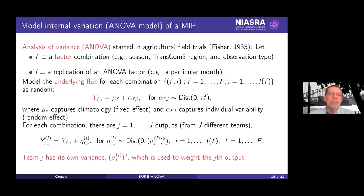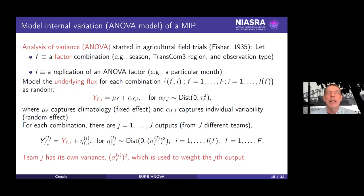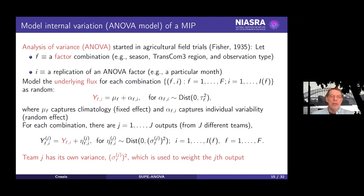So, a little bit of statistics. What we really have is a mixed effects model. To put it into a fairly generic form — valid for Rothamsted, climate projections, and this OCO-2 MIP — these are general ideas where we have factor combinations. In our case: season, region, and observation type, and then replications within that — for a particular month, for example, within season and within transcom region.